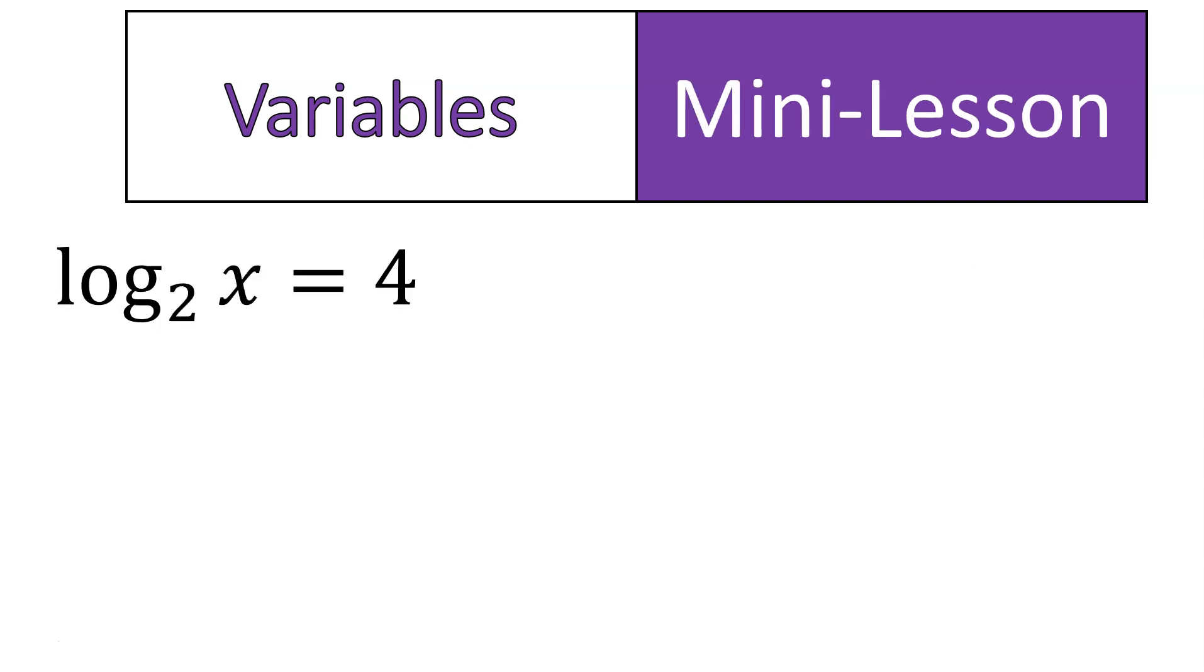The last question type that we're going to look at is when you have an x there. So it's a log base 2 of x is equal to 4. And this one is actually one of the easier types. It basically says 2 to the power of 4 is equal to x, and you're just going to evaluate the equation. Pretty straightforward. 2 to the power of 4 is 16. So 16 is equal to x. Done.